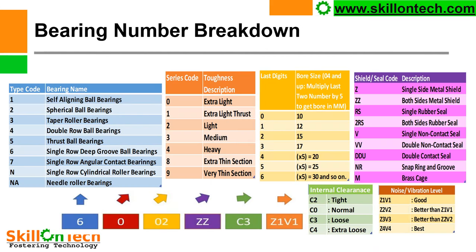In the bearing number breakdown: the first digit is the type code (1 = self-aligning ball bearing, 2 = spherical roller bearing, etc.). The second digit gives the series/width description: 0 = extra light, 1 = extra light first, 2 = light, 3 = medium, 4 = heavy, 8 = extra thin section, 9 = very thin section. The next two digits (in yellow) give the bore ID: 00 = 10 mm, 01 = 12 mm, 02 = 15 mm, 03 = 17 mm; from 04 onward, multiply by 5 — so 05 = 25 mm, 06 = 30 mm, and so on.